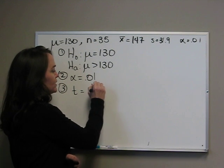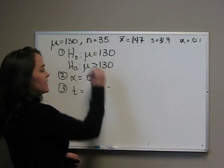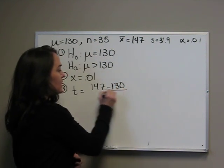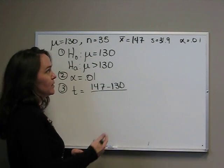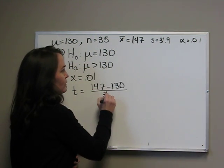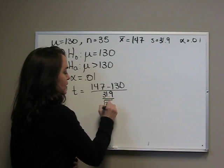It's x-bar, 147, minus mu of x-bar, 130, divided by s of x-bar, which, remember, is 31.9, divided by the square root of 35.